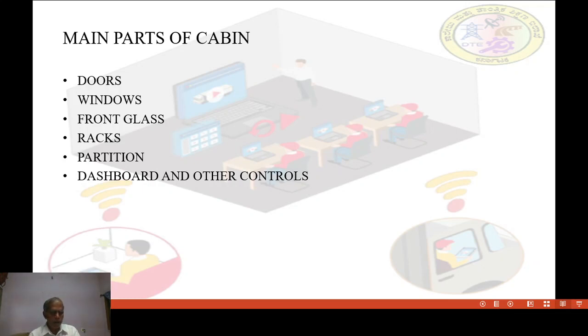Number 4, racks means compartments like train. Two racks are provided, one at lower side, another at upper side.